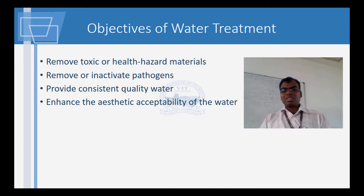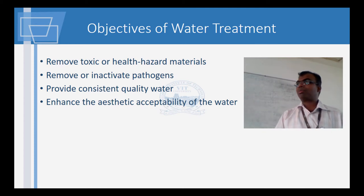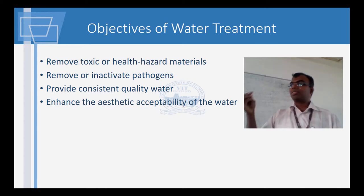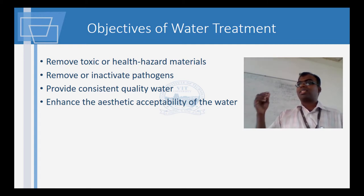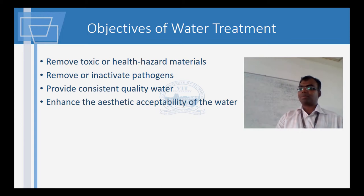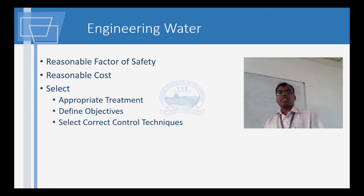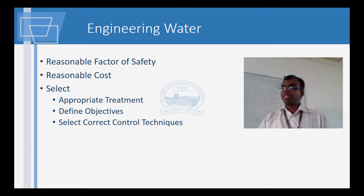Water which you take as a sample from a river is not really water you would want to drink. Even big rivers like the Ganges or Brahmaputra — they are full of water, but you would not want to drink that water. We have to enhance the aesthetic acceptability of the water. As engineers, these are the things we want to do, and good engineering practices means these objectives are fulfilled.